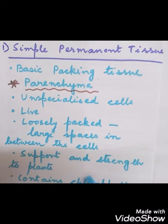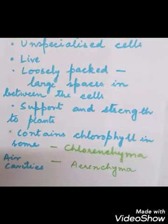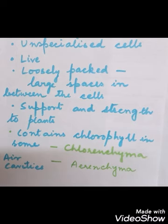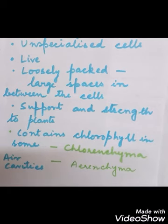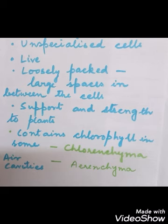Parenchyma cells give support and strength to the plant. Parenchyma cells that contain chlorophyll are called chlorenchyma, which helps in photosynthesis. In some aquatic plants, parenchyma has air cavities so the plant can easily float in water — that type of parenchyma is called aerenchyma. Sometimes parenchyma of stems and roots stores nutrients and water for the plant.